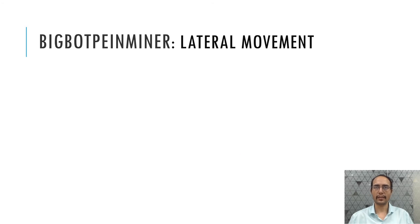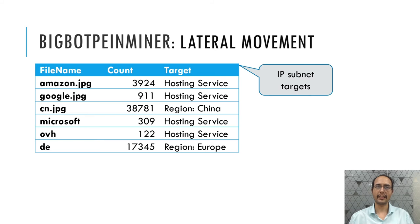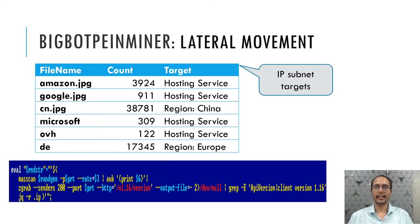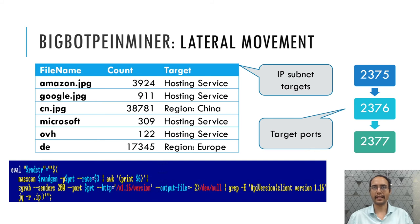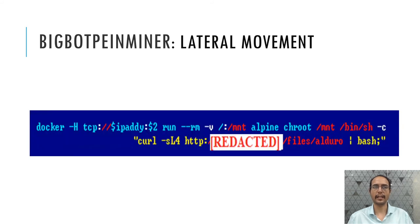For lateral movement, it downloads a set of files containing IP subnets that are either location-specific, cloud hosting service-specific, or specific to certain cloud service providers. It downloads additional components like masscan to scan the IP subnets and identify if any IP has a container with Docker daemon ports exposed. If found, it prepares the list of such IP addresses, connects to them over Docker daemon API ports using the docker -H command, and if the connection is successful, deploys the BigBotPen Miner script inside that container.